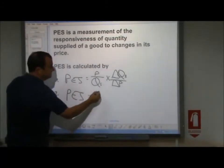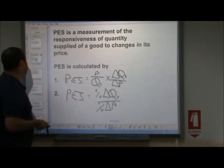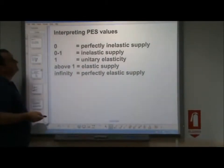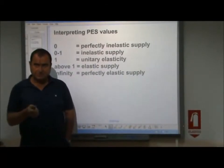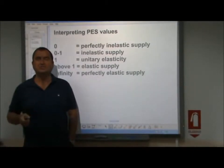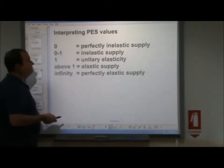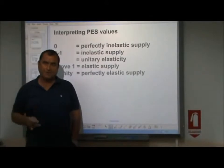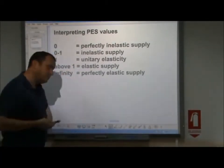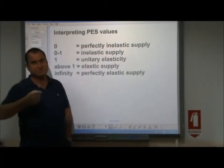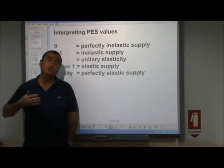Or we can say PES equals percent change in quantity supplied over percent change in price. Either of these equations leads us to a PES value which can be interpreted as follows: if it comes out at zero, we say perfectly inelastic supply — that means when the price changes there is no reaction at all in quantity supplied. If the value of PES lies between zero and one, we say inelastic supply — the supplier reacts to the price change but in a proportionately smaller way. One is unitary elasticity, meaning quantity supplied changes in precisely the same proportion as price. Above one is elastic supply, meaning quantity supplied reacts by a greater proportion than price.